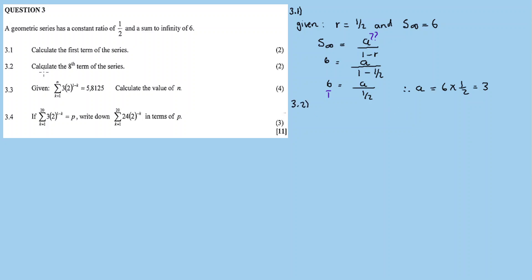3.2, calculate the 8th term of the sequence. The N term for a geometric sequence: TN is calculated as A times R raised to exponent N minus 1. We substitute. We have T8, the 8th term. A is 3. R, the common ratio, is 1 over 2. N is 8, so it's 8 minus 1.